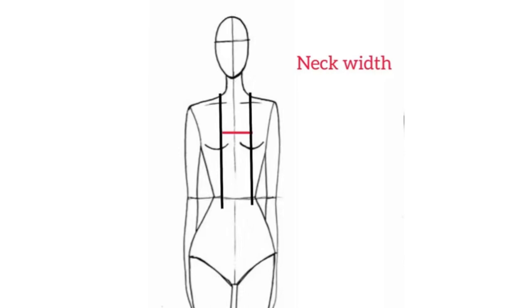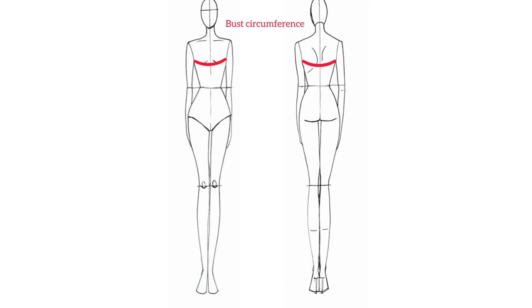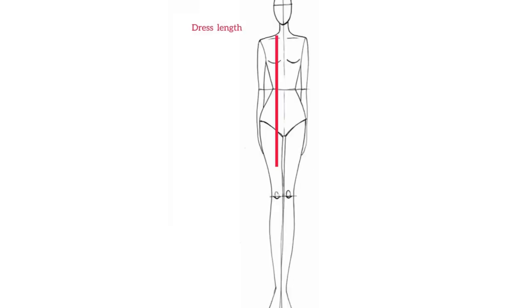The next measurements we need are the bust circumference, the waist circumference, and the hip circumference. Lastly, we need to take the length of the dress. I'm going for a shorter length above my knee, so I'm going with 34 inches. You can choose whatever length you desire — you can make it shorter or longer. Every other measurement we would need, we'll estimate as we go about drafting this bodice block.